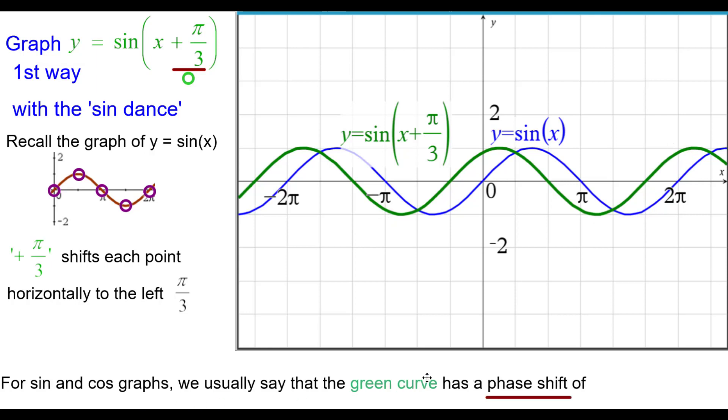We usually say that the green curve has a phase shift of pi over 3 to the left. Instead of saying a horizontal shift, we use the word phase shift. Pause as needed.